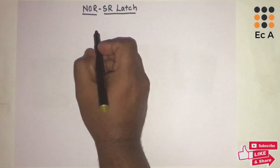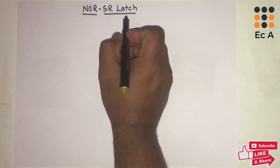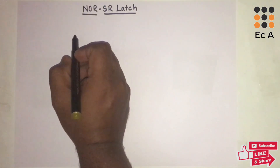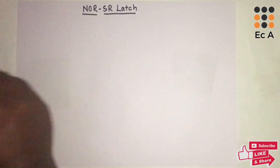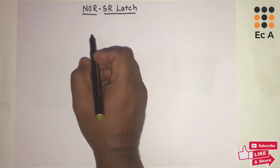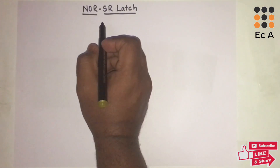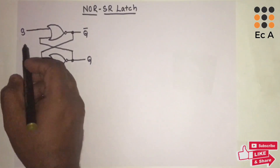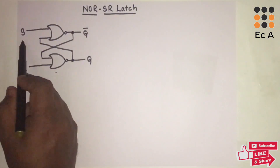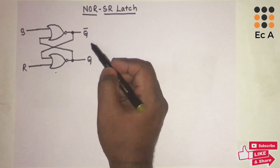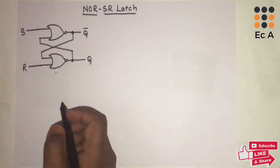Welcome to EC Academy. In this lecture we will understand the NOR SR latch. A latch is the basic storage element which can hold one bit of data. There are two types of SR latch: the NOR latch and the NAND latch. In this lecture we will understand the NOR SR latch. This is the logic circuit, where inputs are S and R — S specifies set, R specifies reset. The output is Q, and Q-bar is the complement of the output.